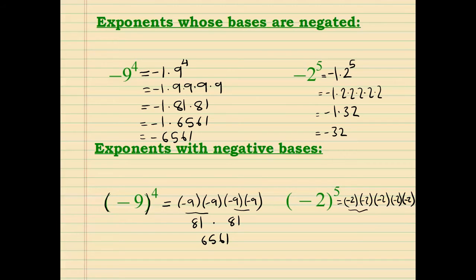Working through negative 2 to the 5th with parentheses: negative 2 times negative 2 gives positive 4, times positive 4, then times one more negative 2 — that's 16 times negative 2, which equals negative 32. These two types are the most commonly missed questions on tests and quizzes.